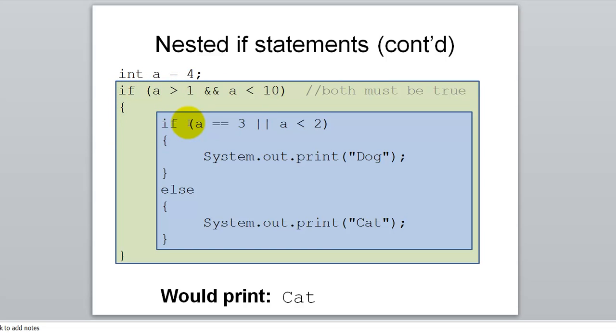Inside of the if statement, we find another if statement. Let's see if this one's true. If a equals 3, well, a is not equal to 3, but this is an or statement, so we only need one side to be true. So let's see if this side is true. Is a less than 2? No, it's not. So neither side of this or statement was true, so we're not going to run the code inside of this if statement, but we go down to this else, and we print the word cat.